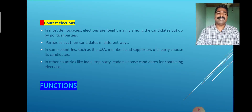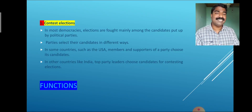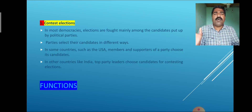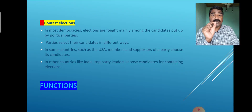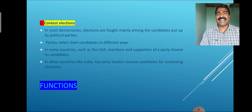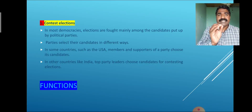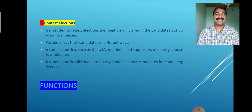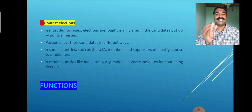Now we discuss the functions of a political party. The first important function is contesting elections. In most democracies, elections are fought mainly among the candidates put up by political parties. Parties select their candidates in different ways across countries. In China, for example, there is a one-party system — only the Chinese Communist Party selects members for election. In some countries such as the USA, members and supporters of a party choose its candidates.